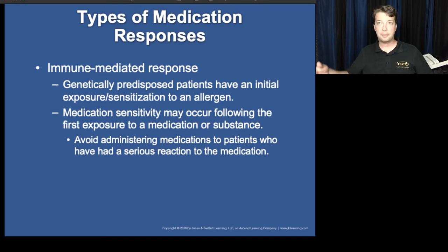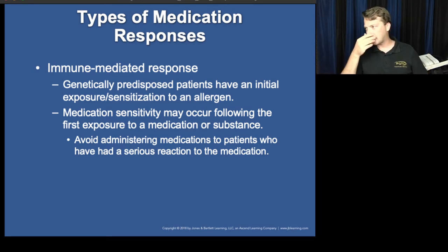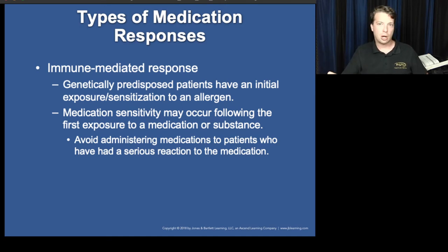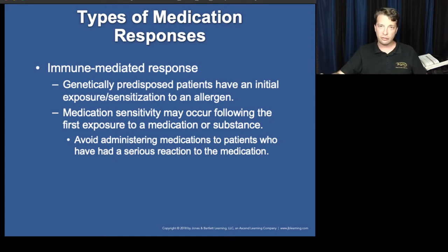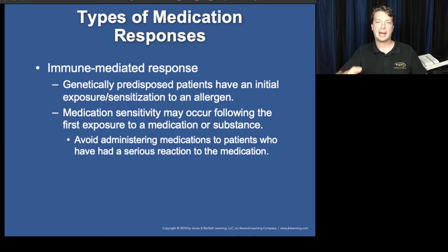In an immune-mediated response, we treat it with things like Benadryl and epinephrine if it becomes anaphylactic. We can't remove the medication from their bloodstream. If you accidentally gave 10 mg of morphine instead of 1 mg and the patient is going unresponsive, that's an overdose — pop them with Narcan, problem solved. But if you gave fentanyl or morphine and the patient had an immune-mediated allergic reaction, you can give Narcan all day to keep them awake and breathing, but it would not prevent the immune response because the immune system is reacting directly to that chemical as an antigen.